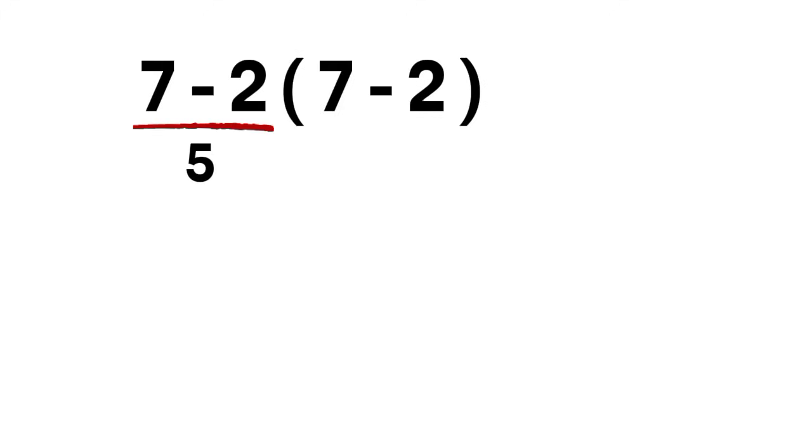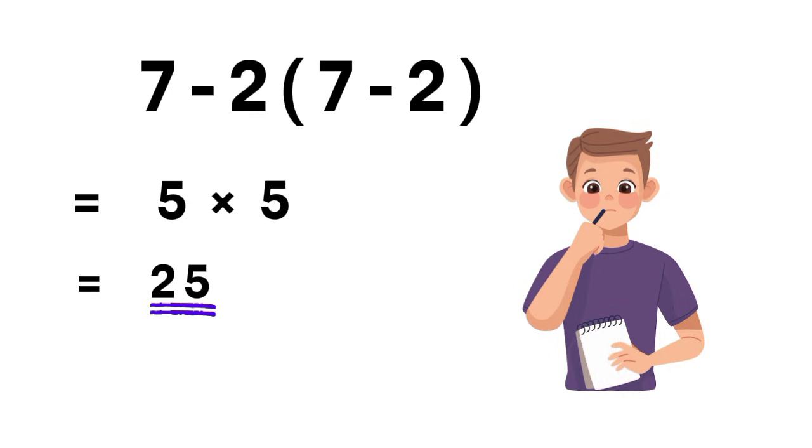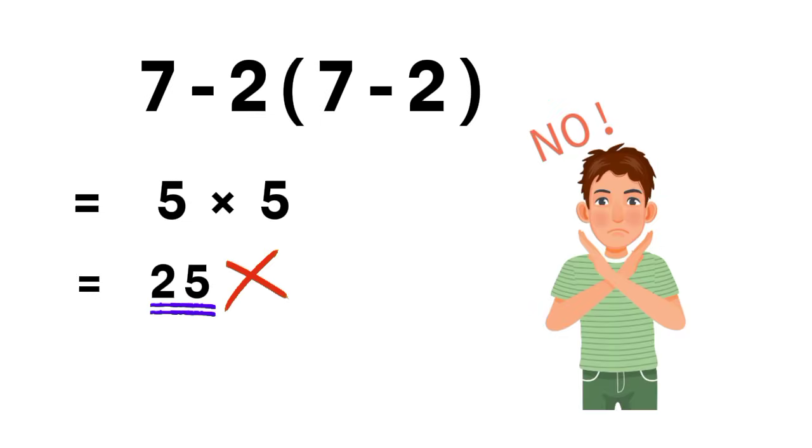7 minus 2 gives us 5. And again, inside the parenthesis, we also have 7 minus 2. So someone might jump to the conclusion that 5 times 5 is 25 and assume that is the final answer. But that approach is not correct.